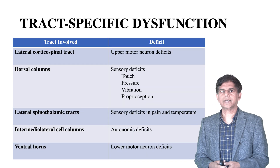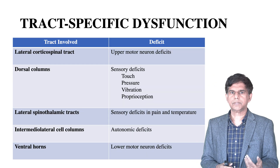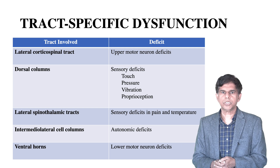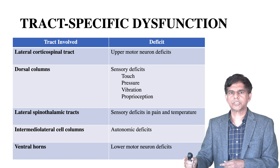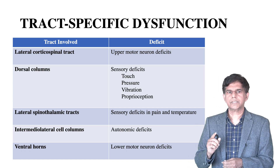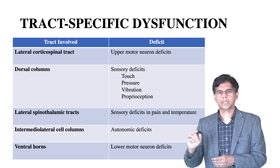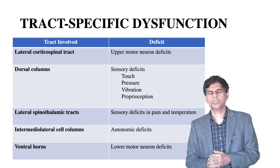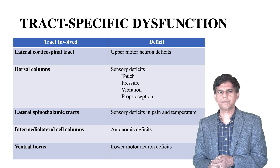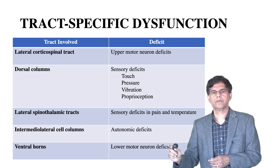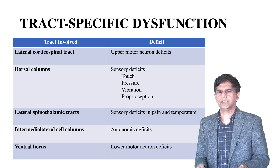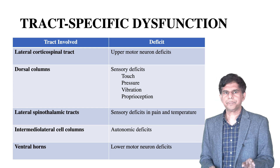Signs to localize the lesion: lateral corticospinal tract involvement produces upper motor neuron deficits; dorsal column involvement produces sensory deficits in touch, pressure, vibration, and proprioception; lateral spinothalamic tract produces sensory deficit in pain and temperature; intermediolateral cell columns produce autonomic deficit; ventral column involvement produces lower motor neuron deficits.